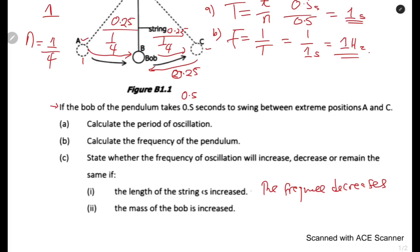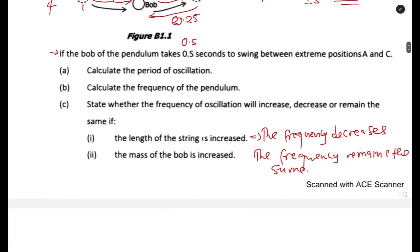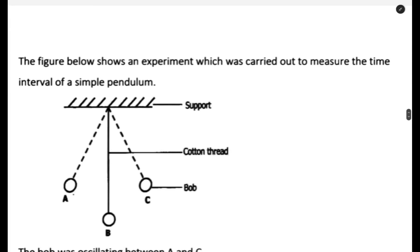For part (c)(ii), regarding the mass of the bob: mass is one of the factors that does NOT affect the period of a pendulum. Therefore, the frequency remains the same. At this point you need to know the factors that affect the period — these are acceleration due to gravity and the length of the string — and factors that do not affect it, such as the mass or size of the bob.